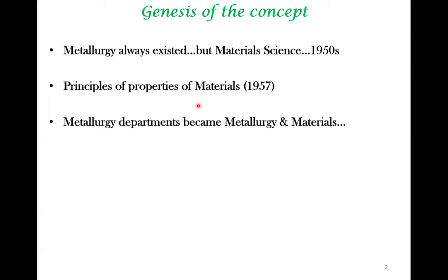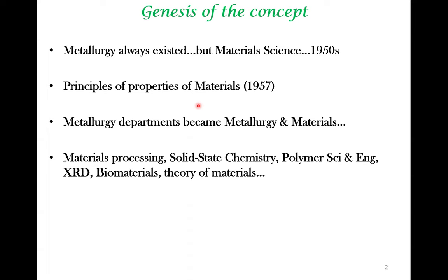Many metallurgy departments had a name change into metallurgy and material science, or metallurgy and materials engineering. This happened first in the United States, then in other parts of the world, and in India too. At the time of this transformation, material science was defined via sub-disciplines: material processing, solid-state chemistry, polymer science engineering, material characterization tools, biomaterials, and theory of materials.